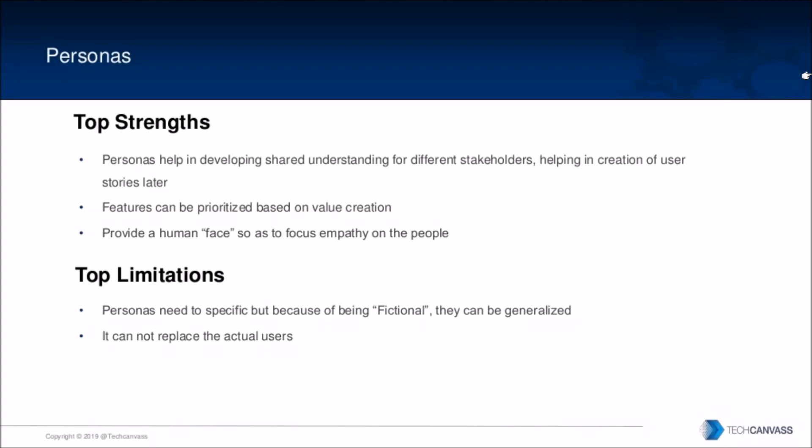The top limitations are that personas need to be specific, but because of being functional they can be generalized as well. You can't just interview one student and conclude those are the general traits of all students, because each student is different with their own traits and characteristics. It becomes difficult to decide how many students to interview — you can take five or ten, but at one point you'll have to generalize. This becomes a limitation, and personas cannot replace actual users because the generalization means they can't always be a hundred percent accurate.